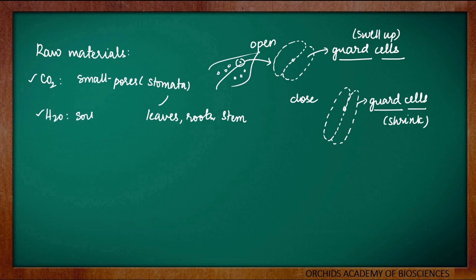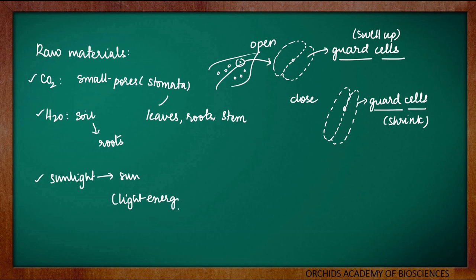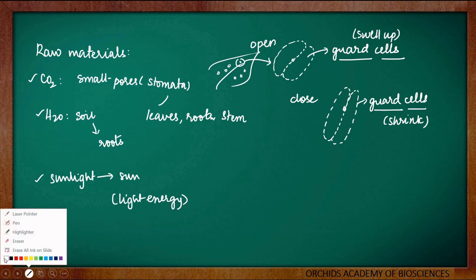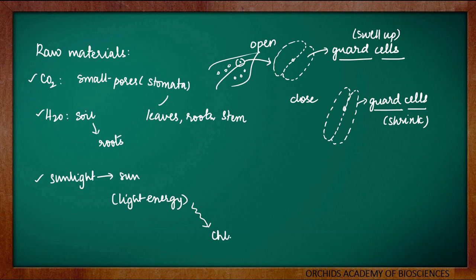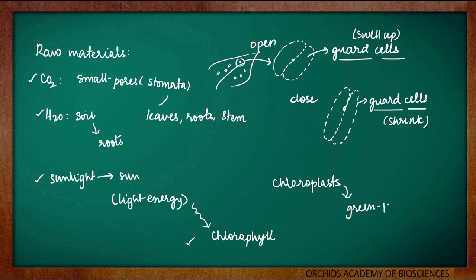The next raw material is water. Water is present in the soil which is taken up by the roots. Third raw material is sunlight, which comes from the sun and acts as a source of light energy for the plant to prepare its food. This light energy will be trapped by the fourth raw material, known as chlorophyll. There are certain green plastids present in the cells of plants and these plastids are known as chloroplasts. This chloroplast contains some green colored pigments in them and these green pigments are called as chlorophyll. Chlorophyll is very essential for trapping the light energy which comes from the sun.